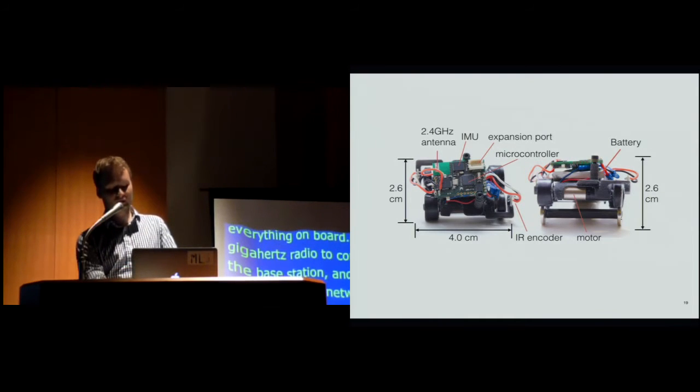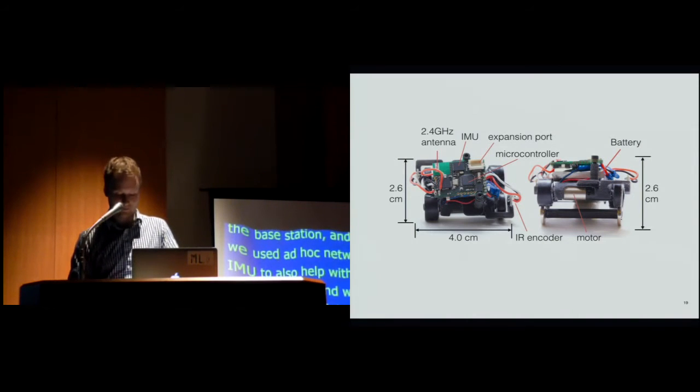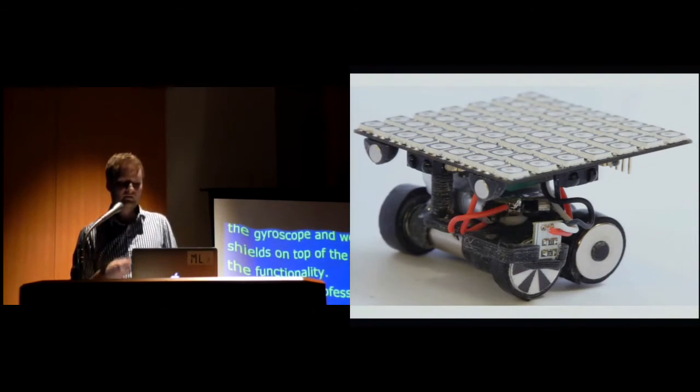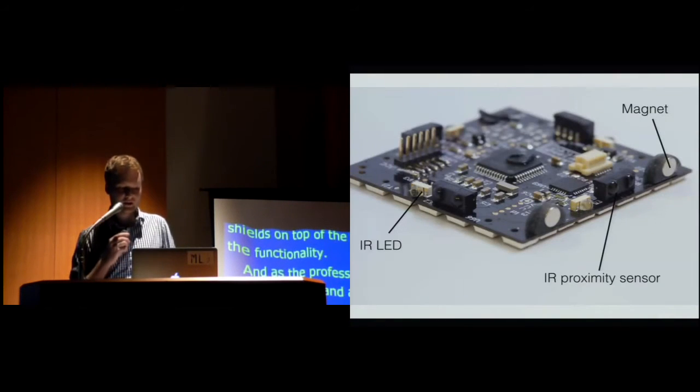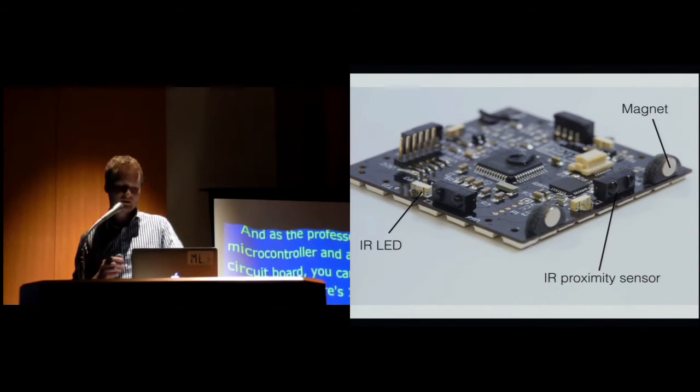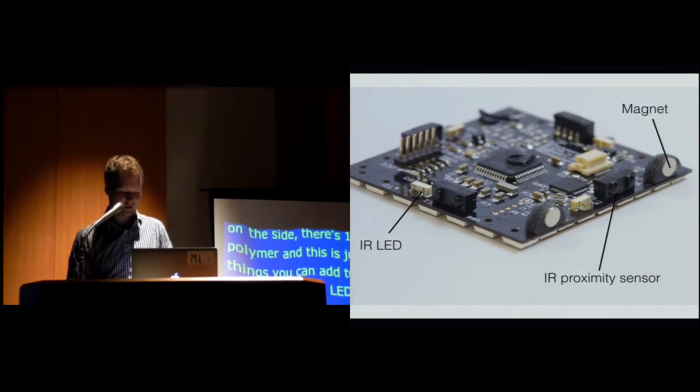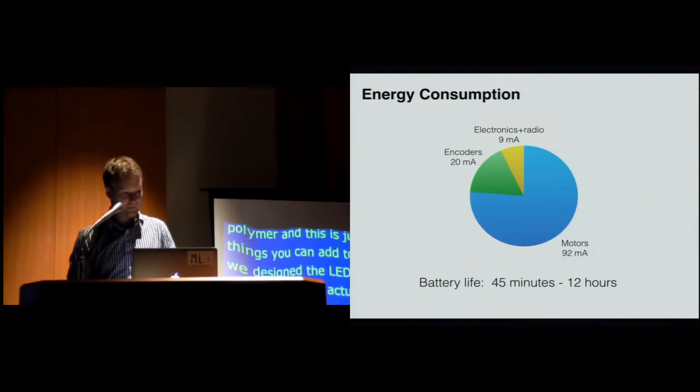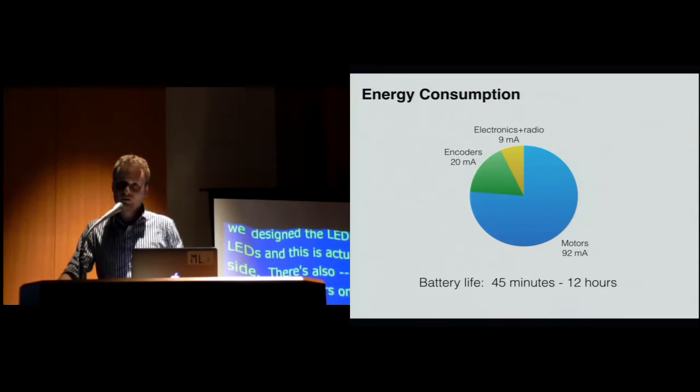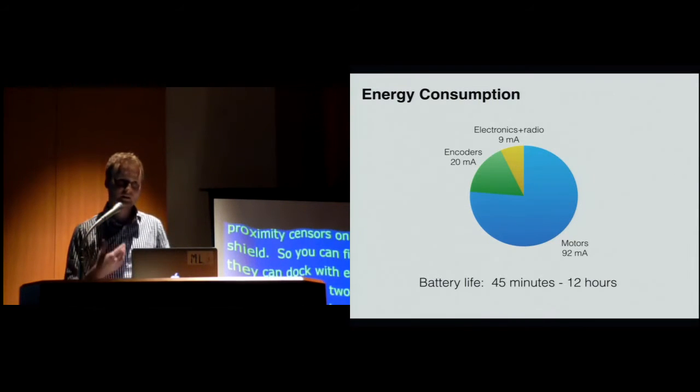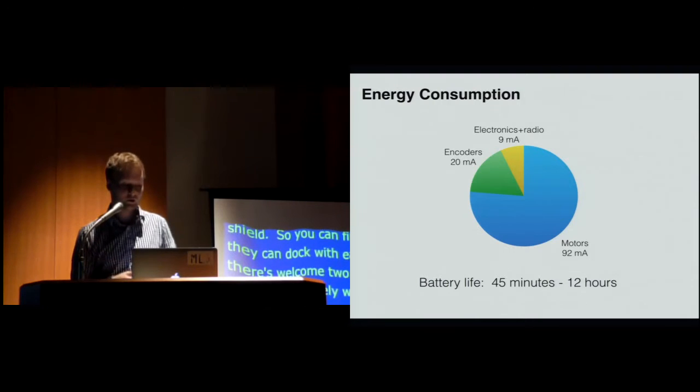And under the circuit board, you can see the picture on the side, there is a battery, 100 milliampere lithium polymer. And this is just an example of the things you can add to the robot, such as we designed an LED shield with 60 LEDs. And this is actually on the backside. There is also infrared LED and infrared proximity sensors on each side of the shield. So if you have two shields, they can find when they are and they can dock with each other. And there is also two magnets so they can align precisely to each other. And we'll show you this in the application. So the energy consumption was about 45 minutes, continuously running with the encoders and the motors, which consume the most energy. And it can be up to 12 hours if the motors and encoders are not running and the robots are sending the data continuously at 10 hertz to the computer from the sensors.